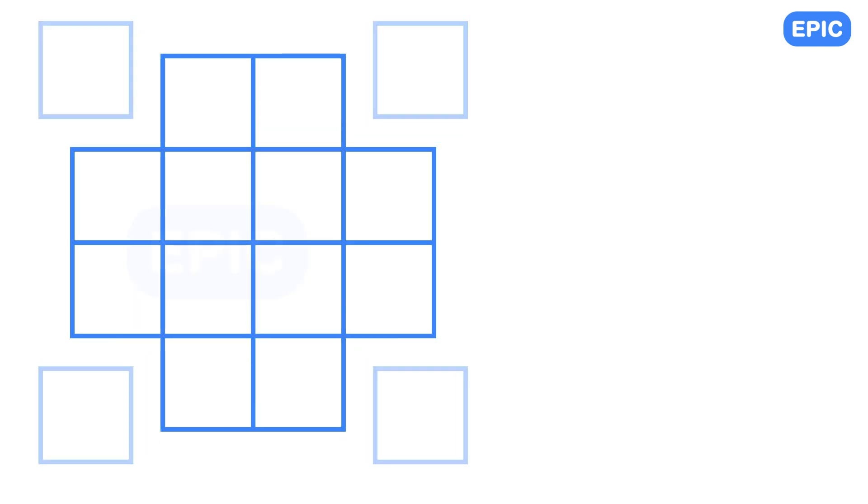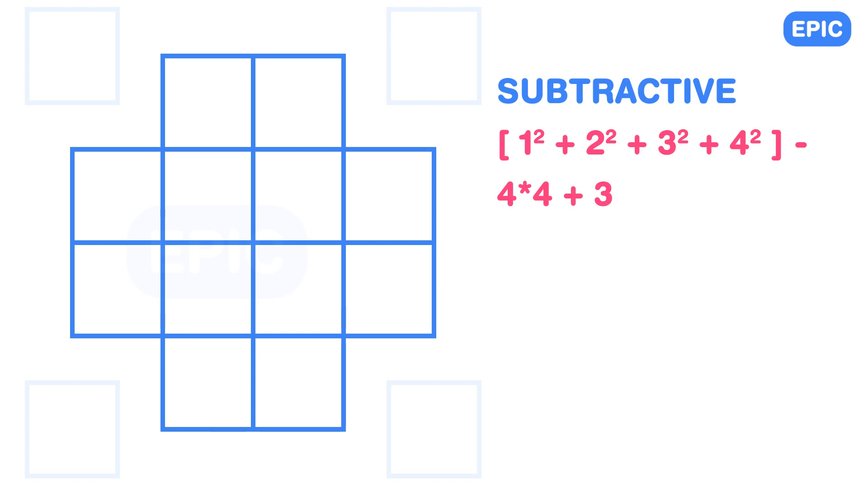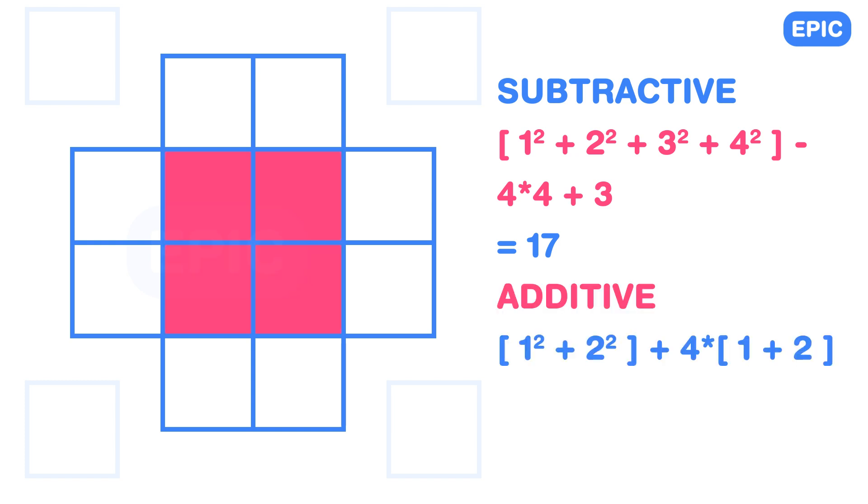Let us check it for a 4 x 4 square. As per the subtractive method it will be 30 minus 16 plus 3 equals 17. As per the additive method, the largest square in the middle is 2 x 2. So it will be 1 plus 4 plus 4 into 1 plus 2 equals 17. Looks like we are good. You can choose the method of your liking but it doesn't really matter if you know the steps.